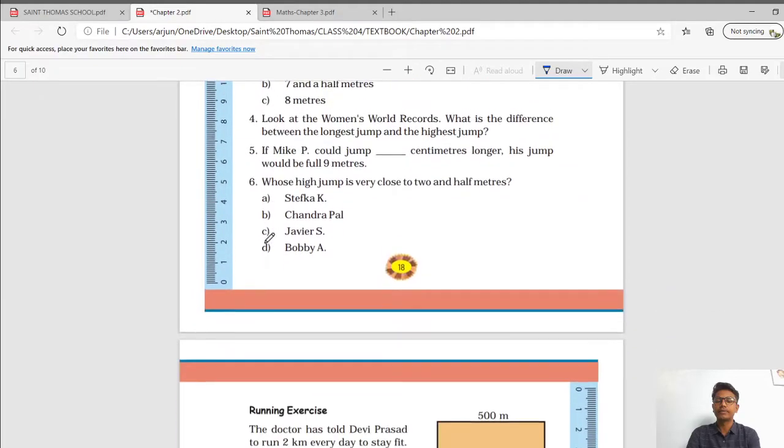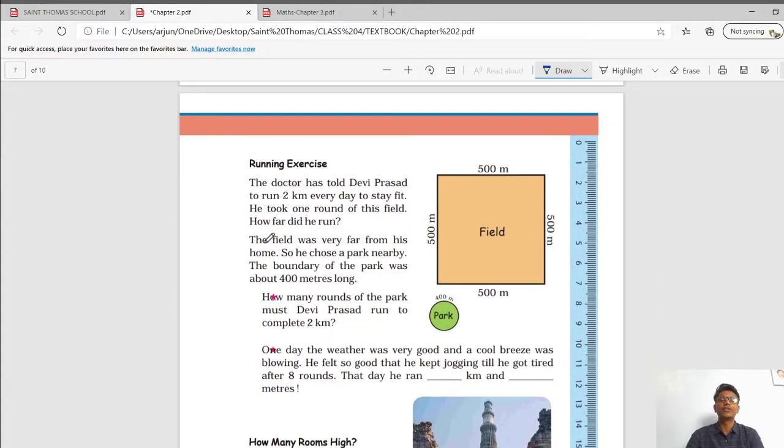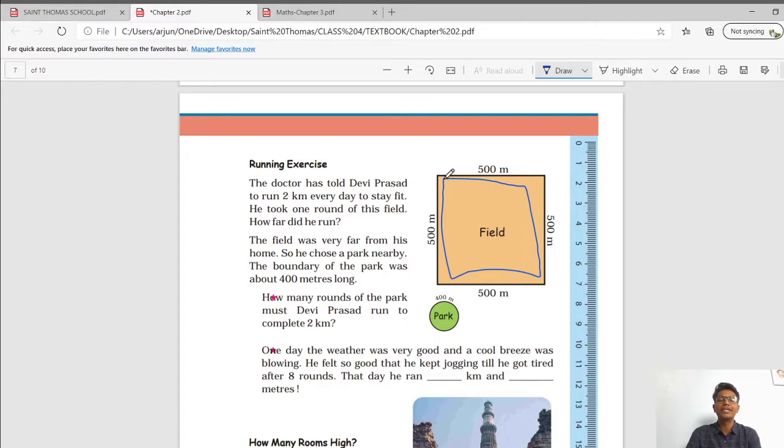If you run a marathon on a stadium track, you will have to complete dash round. This you can do by your own self for a marathon 40 kilometers. And approximately 10 rounds, we ran 4 kilometers. Moving further. Running exercise type of question can also be asked in the MCQs. The doctor has told Devi Prasad to run 2 kilometers every day to stay fit. He took one round of the field. How far did he run?